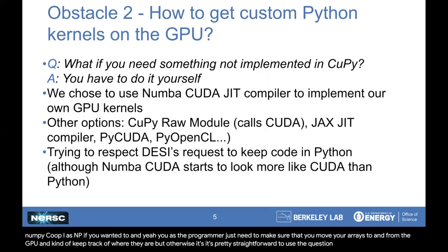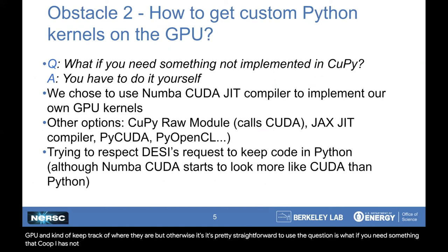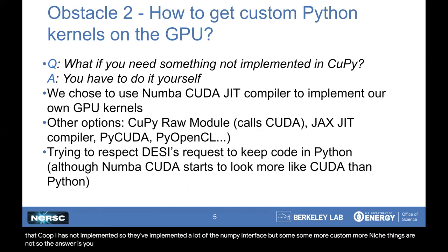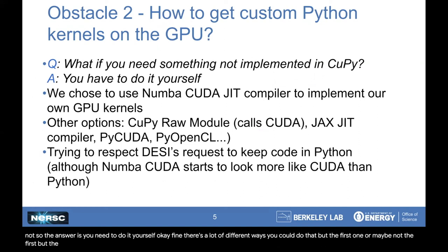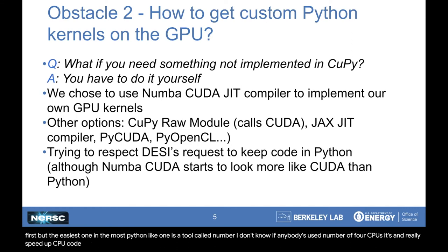The question is, what if you need something that CuPy has not implemented? They've implemented a lot of the NumPy interface, but some more custom, more niche things are not. So the answer is you need to do it yourself. There are a lot of different ways you could do that, but the easiest and most Python-like one is a tool called Numba. It's a very friendly way to JIT compile and really speed up CPU code, and it's similar for GPU — except that you really have to think about writing code for GPU, which is different than for CPU.